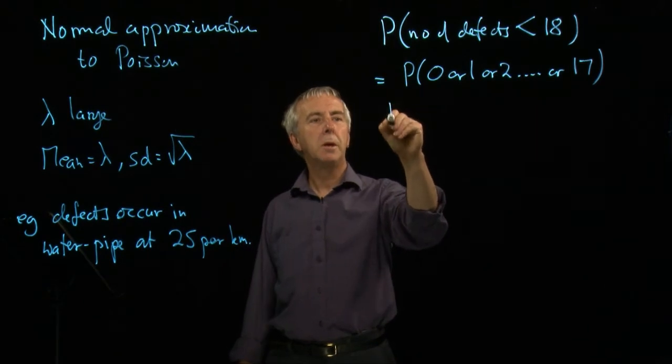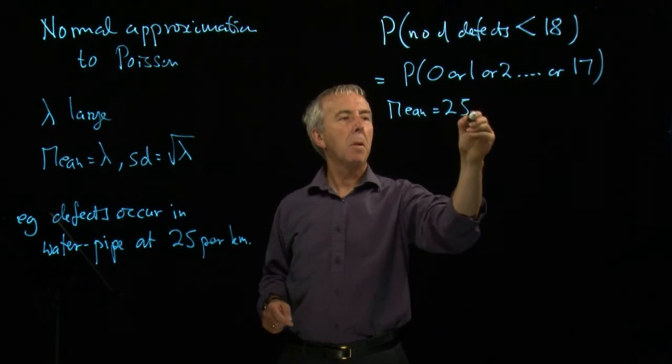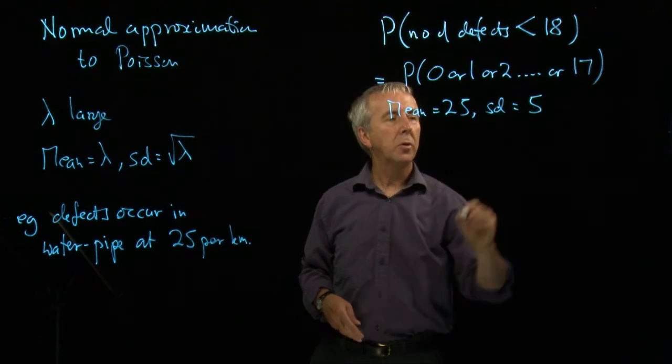We have the mean is 25, lambda. And the standard deviation is the square root of lambda, which is 5.